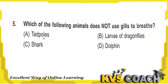Next question: which of the following animals does not use gills to breathe? Tadpoles breathe through gills. Larvae of dragonflies also breathe through gills. Sharks also breathe through gills. Dolphins breathe through lungs — that is why they come to the surface of water again and again. So the right answer is dolphin.